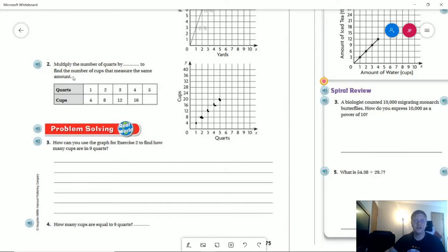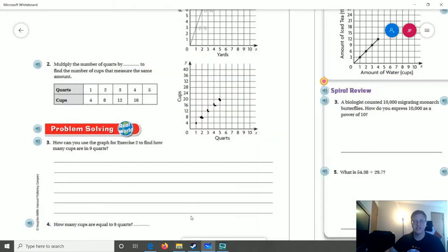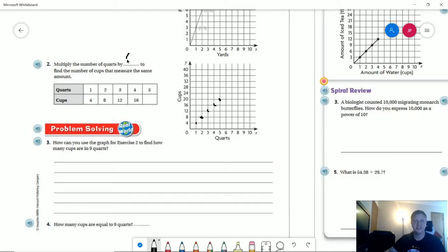I'll start with number two. We're going to multiply the number of quarts by four to give us the answer. If we keep counting by fours across here, that gives us 20, and I've already filled in all five points. We can see we're moving in a straight diagonal, so for five quarts we have 20 cups.